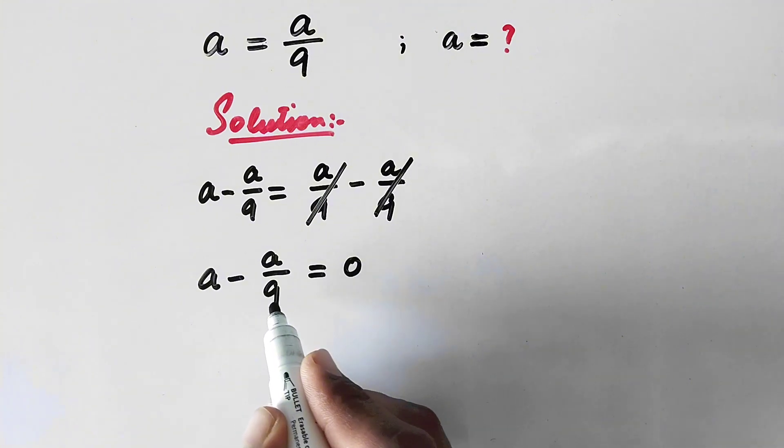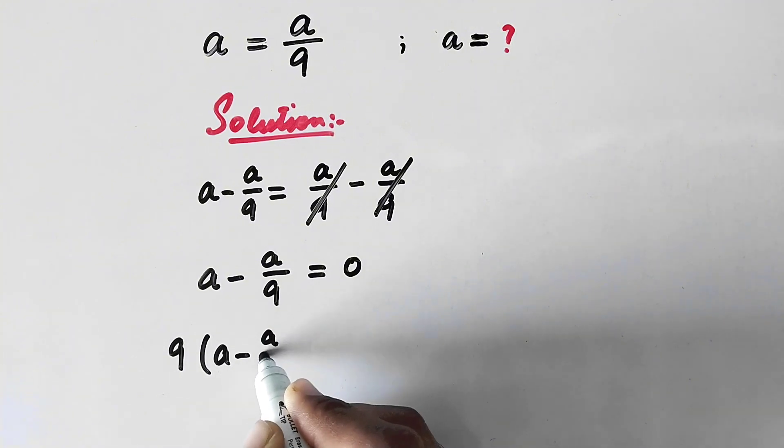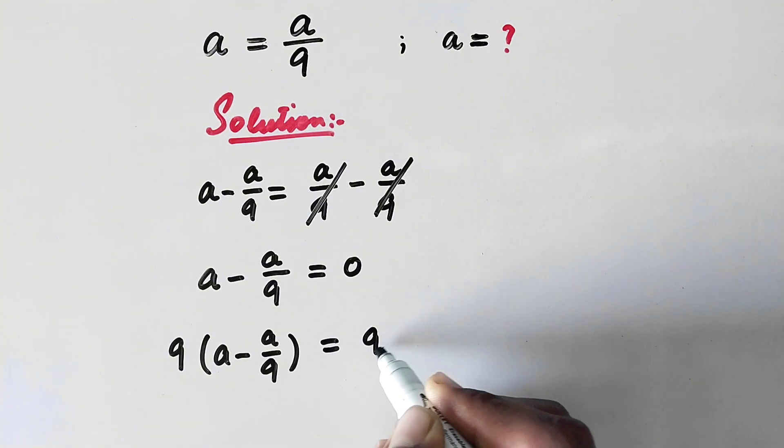And we are left with a minus a over 9 is equal to 0. And now what we will do next here is we will multiply both sides with 9 equal to 9 times 0.